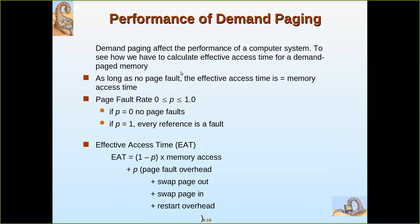The effective access time measures how much time it takes to access information from main memory, considering how long a page resides in a waiting queue for IO. As long as there is no page fault, the effective access time equals the memory access time, since access is only from main memory. The page fault rate, expressed as a probability p, ranges from near zero — meaning no page faults and all pages in main memory — to near one, meaning every reference is a page fault.